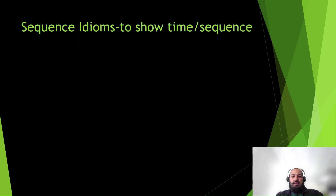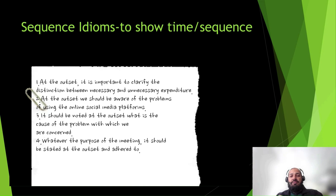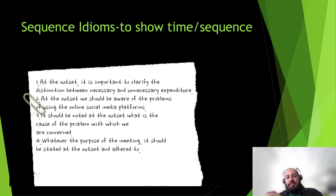The first one is 'at the outset.' At the outset basically means the beginning. How to use it — the example is: 'At the outset, it is important to clarify the distinction between necessary and unnecessary expenditure.' So in the beginning, it is important to clarify the distinction between the expenditures.